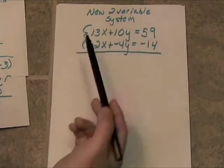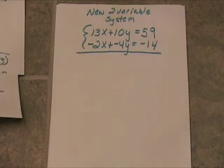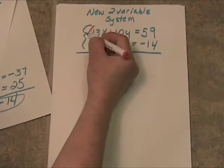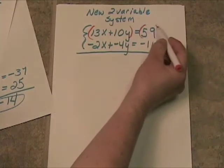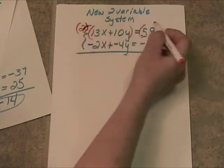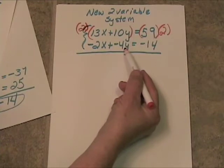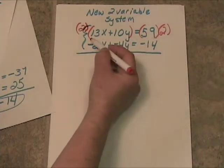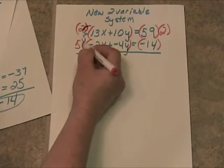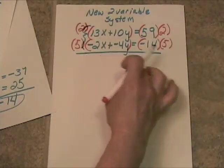I'm going to multiply the top equation through by 2. If I multiply the top equation by 2, I'd get 20y right here. And if I want to get a negative 20y down here, I'd have to multiply through by 5. So I'll multiply the top by 2 and the bottom by 5.